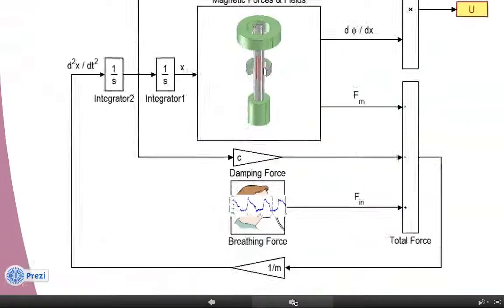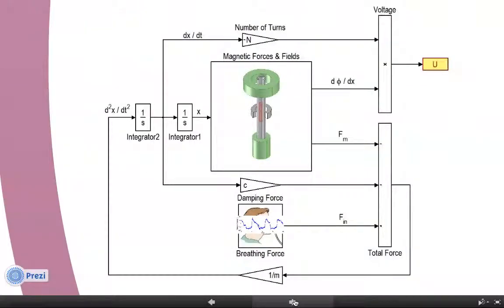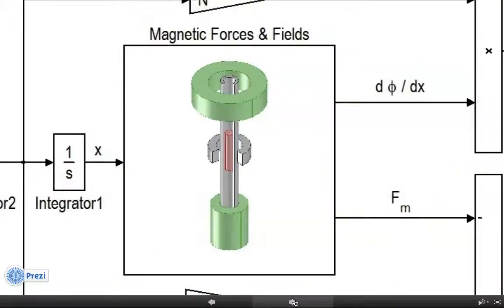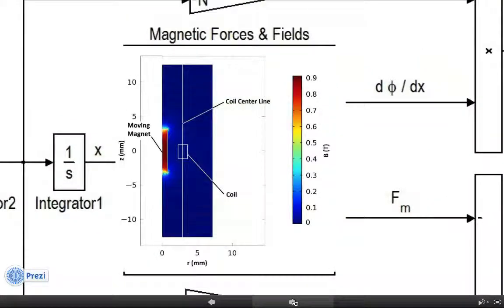In addition to the breathing force, we need to calculate the magnetic field around the free magnet. We used COMSOL software to calculate the magnetic flux density around the moving magnet, and we calculated the magnetic flux gradient along the coil's centerline.